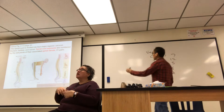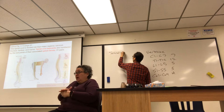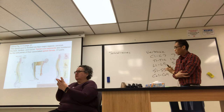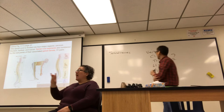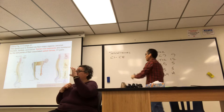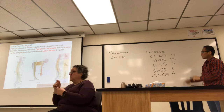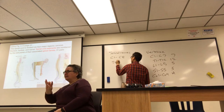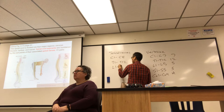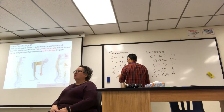The spinal nerves that emanate from each segment come in pairs. There are 8 cervical spinal nerves (C1 to C8), 12 thoracic (T1 to T12), 5 lumbar (L1 to L5), 5 sacral (S1 to S5), and 1 coccygeal spinal nerve — totaling 31 pairs.